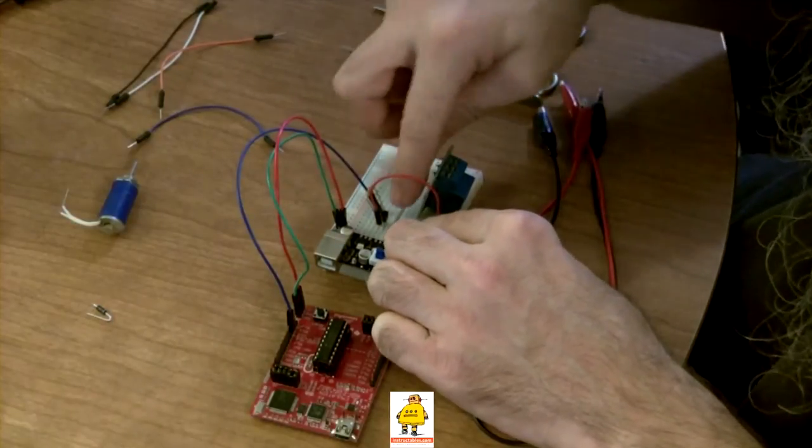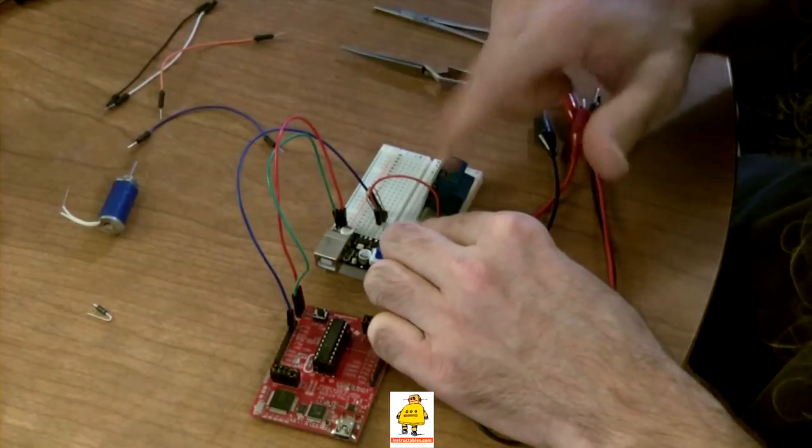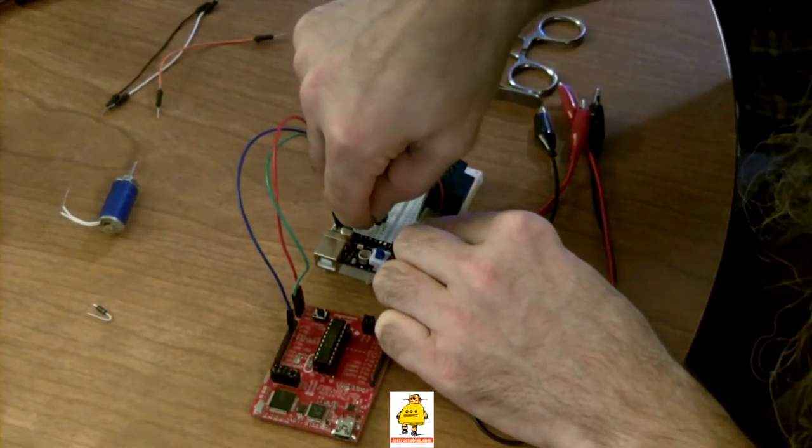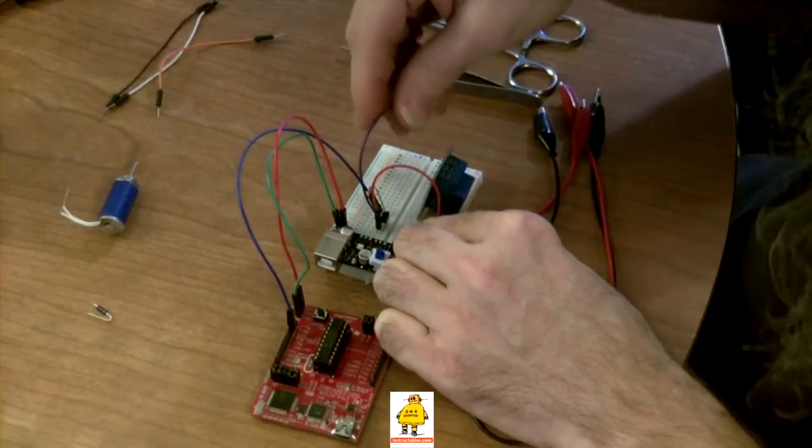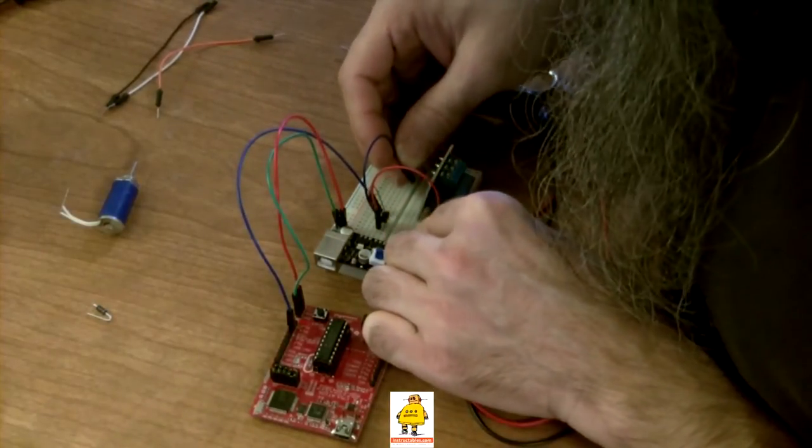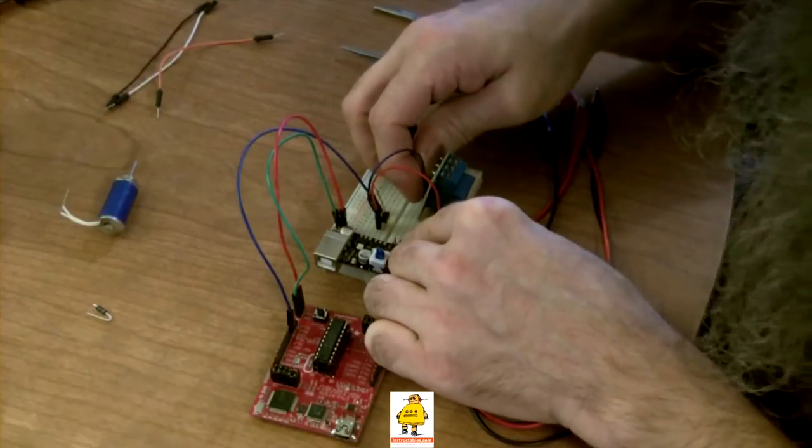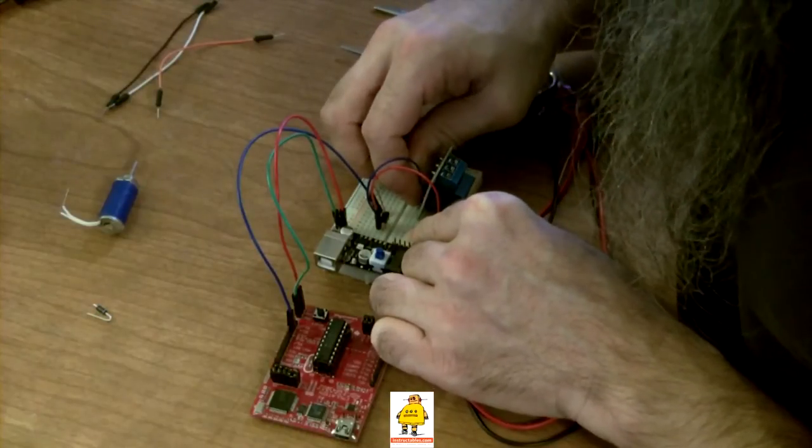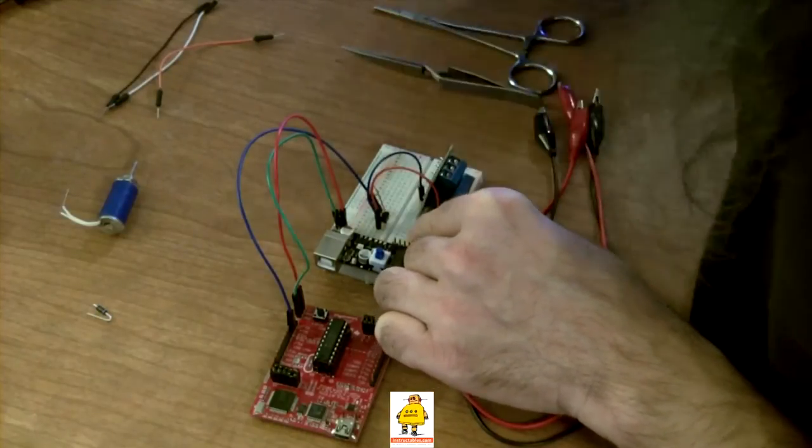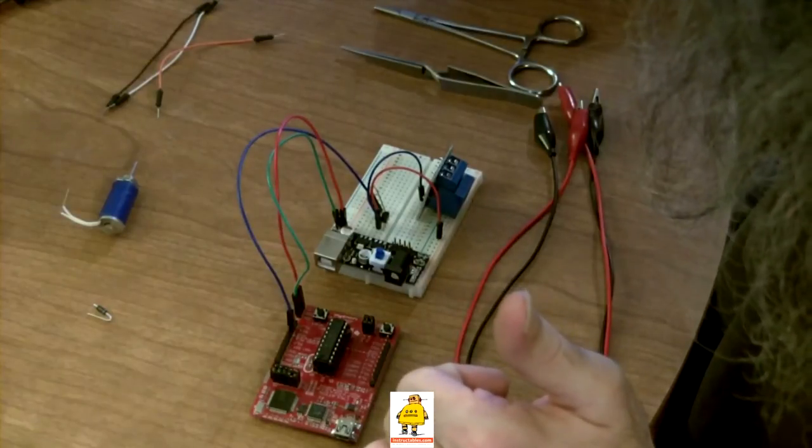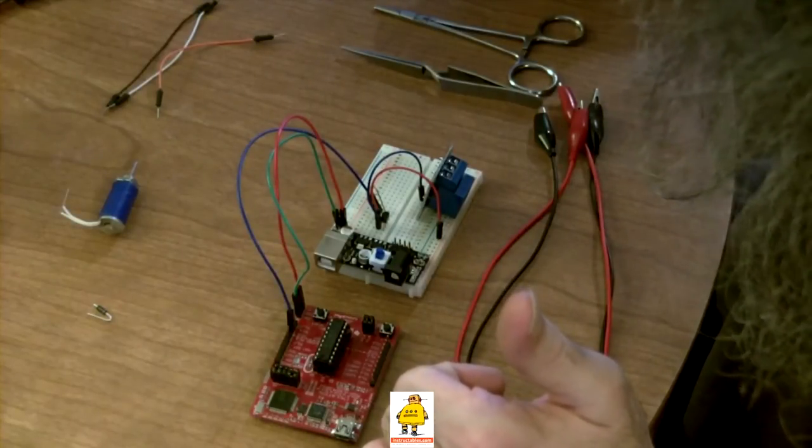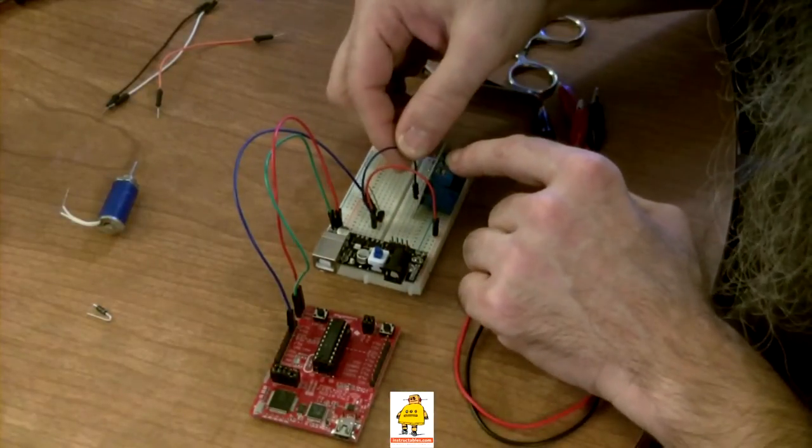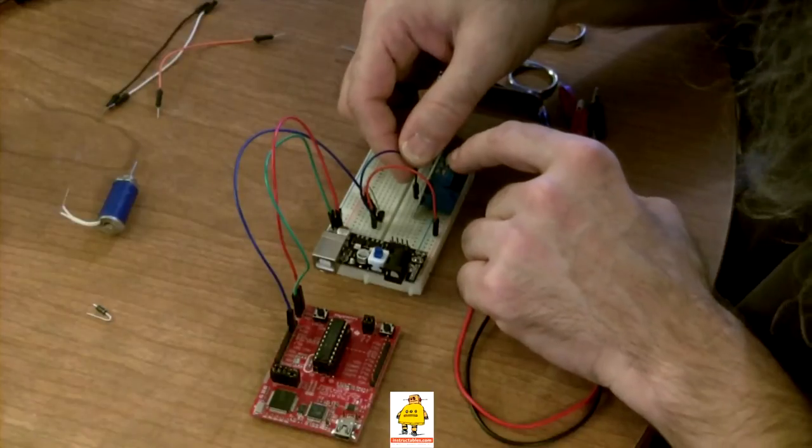We are now going to feed the signal from the transistor out to the signal input of our relay. Our signal line comes from the transistor to the signal line on our relay. Now, we need to get our 5 volts under the coil of the relay. This is the signal that opens and shuts the switch for the coil.